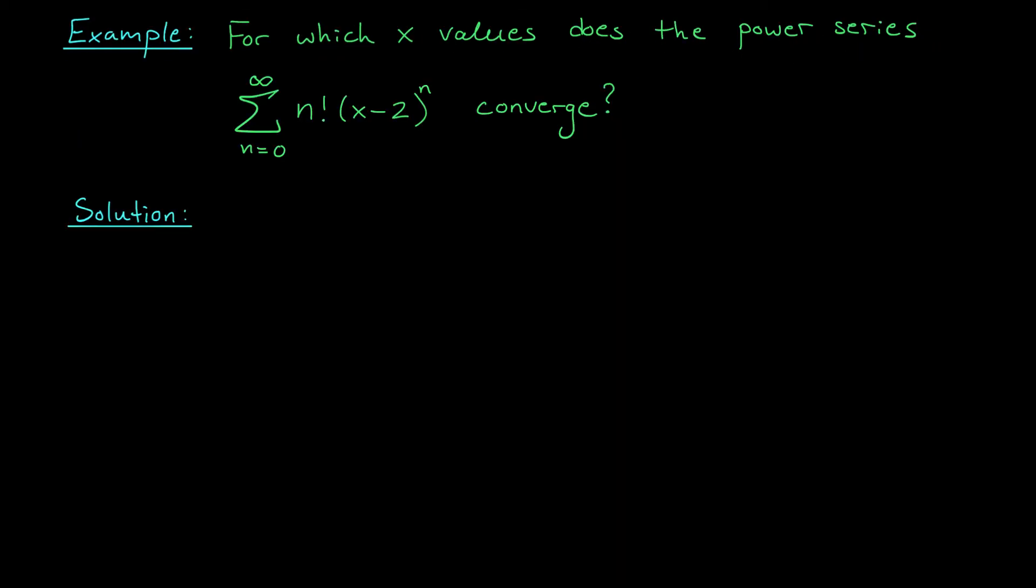Okay, to end this video I have one more example for you on convergence of power series. Consider the series shown here, the sum from zero to infinity of n factorial times x minus 2 to the n. The question is, for which x values will this series converge? Now, we'll soon see some shortcuts for finding the x values where a power series converges. But until then, we'll always approach these problems in the same way. We'll apply the ratio test. So let's write this down. We'll apply the ratio test.